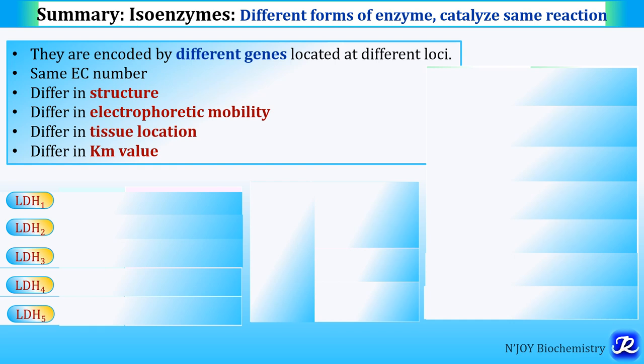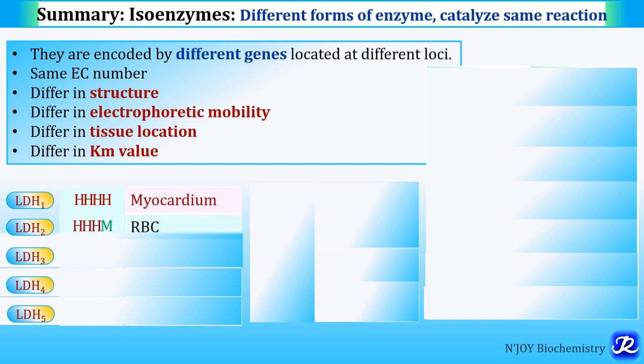LDH is a tetramer with H (heart) and M (muscle) polypeptide chains. LDH1 is H4 — all four subunits are H type — present in the myocardium (heart). LDH2 is H3M1, predominantly in RBC. LDH3 is H2M2, predominantly in brain. LDH4 is H1M3, present in liver.